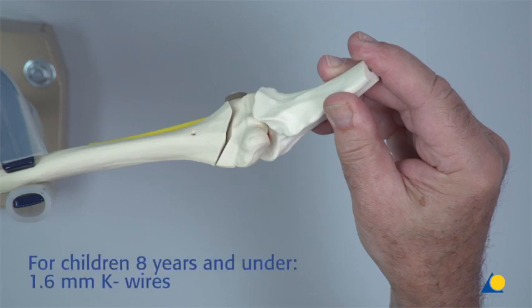For children 8 years of age and under, it is recommended to use 1.6 mm K-wires. For older children, 2.0 mm K-wires are recommended, which provide higher stability.